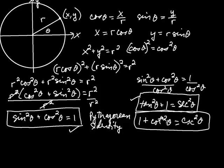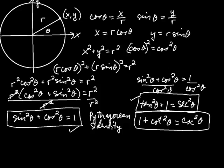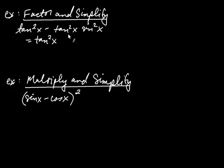Let's see some examples making use of these identities. Let's factor and simplify. Both terms have a tangent squared, so factor that out: tangent squared times (1 minus sine squared).